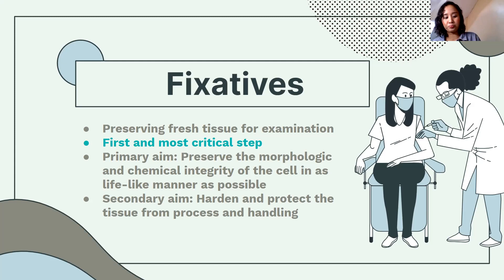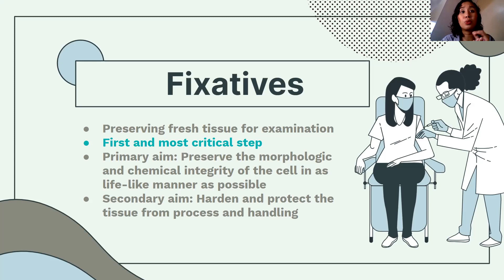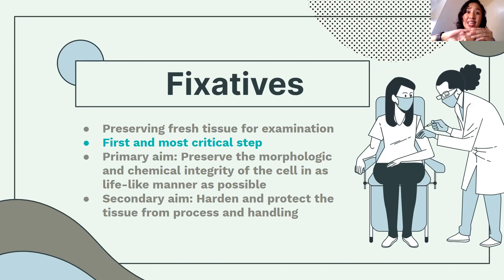Once a tissue is removed from the body, the degeneration process starts automatically — the process of decay, putrefaction, and autolysis. Your cells have enzymes — lysosomes — that will slowly digest and destroy the cells. To reduce the effects of degeneration, we need to use fixatives as soon as possible.